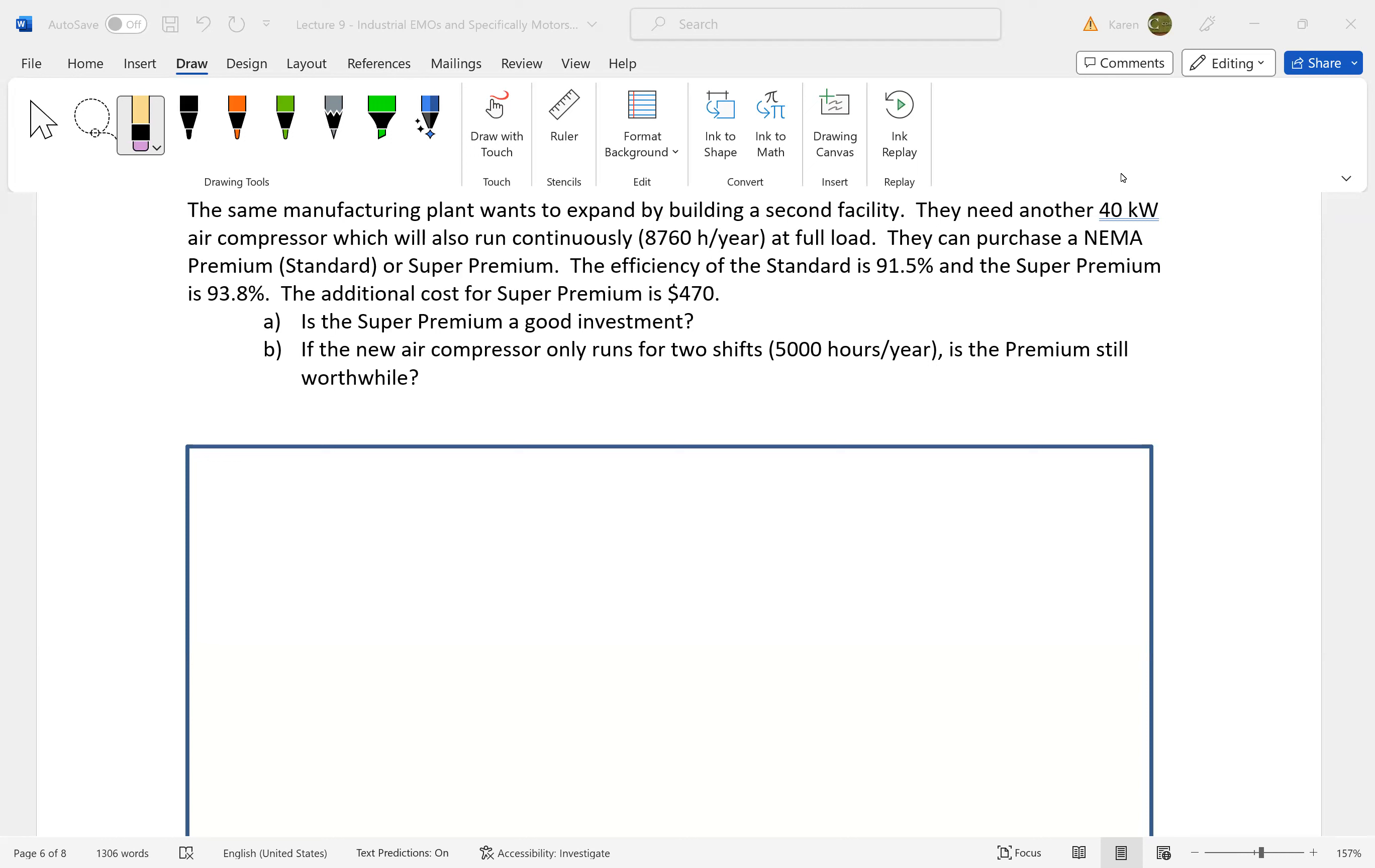Now we're considering this plant who wants to build a second facility. It's going to need another 40 kilowatt air compressor that will run continuously 8,760 hours per year at full load. They can purchase one with 91.5% efficiency or one with 93.8% efficiency, but the 93.8% will cost $470 more. Let's take a look at the difference in a small amount of efficiency for an additional cost and see if that's a worthwhile investment.